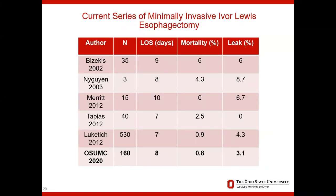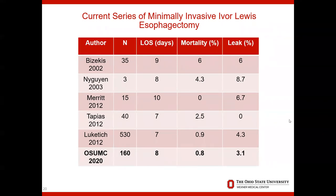These are the minimally invasive Ivor Lewis esophagectomy studies currently published in the literature. The Ohio State experience, listed at the bottom, reported over 160 cases with a median length of stay of eight days. Our mortality rate is exceedingly low at 0.8 percent, our anastomotic leak rate is 3.1 percent, and our results are outstanding relative to other published series in the literature.